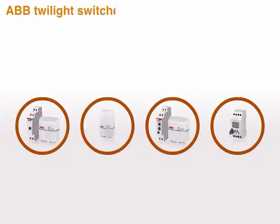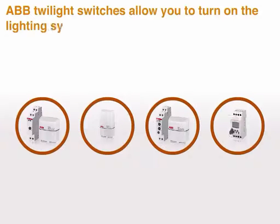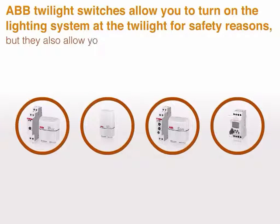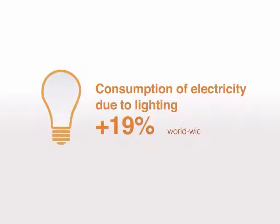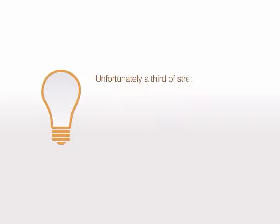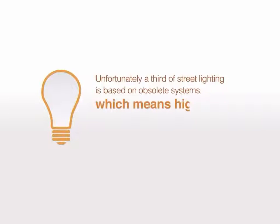ABB twilight switches allow you to turn on the lighting system at twilight for safety reasons, but they also allow you to reduce energy consumption. Consumption of electricity due to lighting has risen by up to 19% worldwide. Unfortunately, a third of street lighting is based on obsolete systems, which means high consumption and low efficiency.